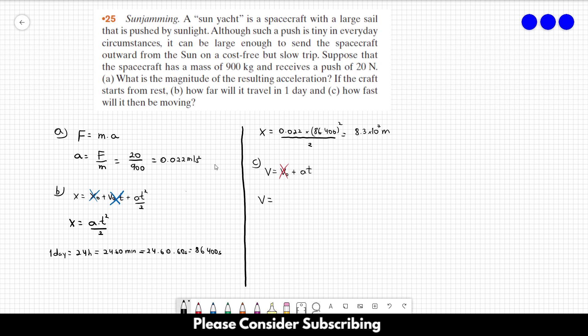0.022 times T, which is 86,400. And this is equal to 1.9 times 10 to the third meters per second. And that's the answer of this exercise.